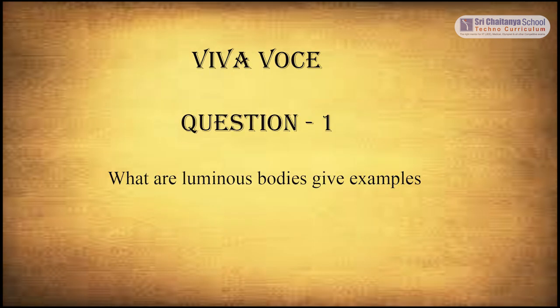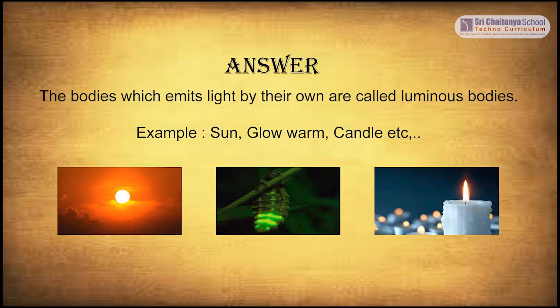Based on this experiment, I will ask a few questions. The first question: what are luminous bodies? Give examples. The answer is: the bodies which emit light by their own are called luminous bodies. For example, the sun, a glow worm, a candle, and so on.